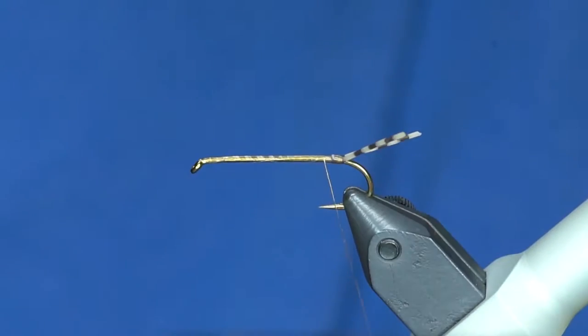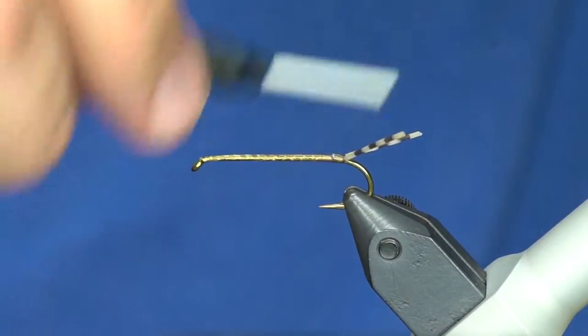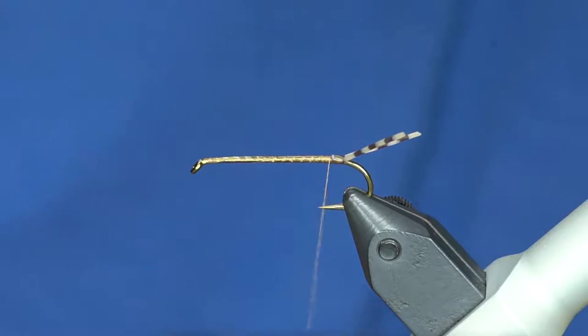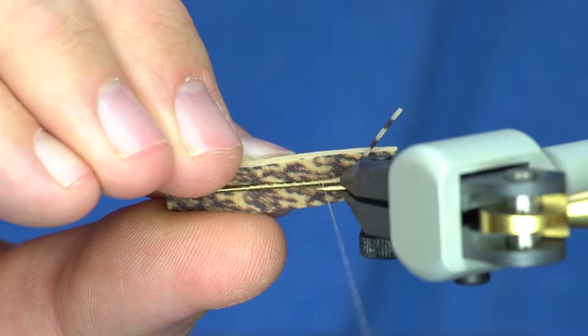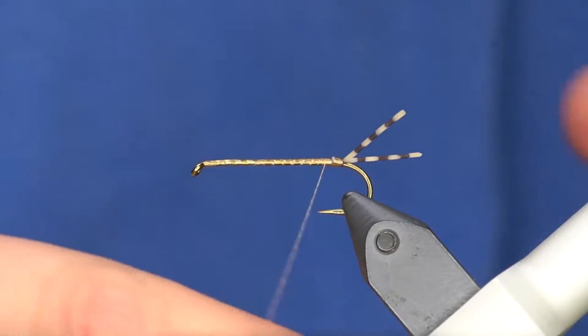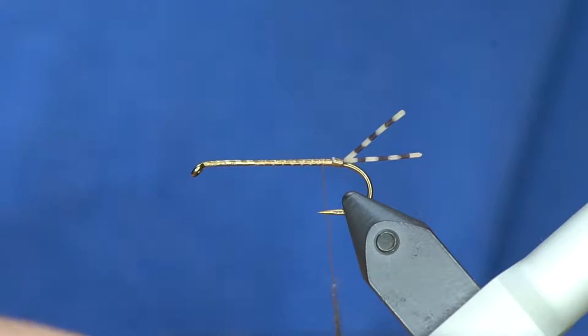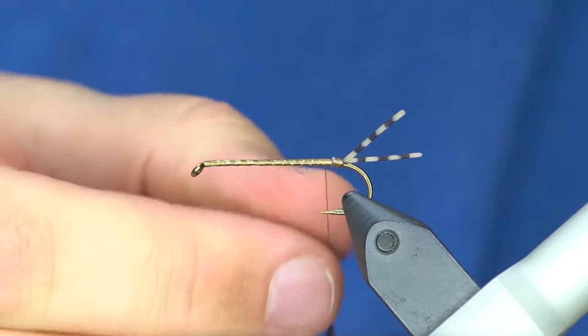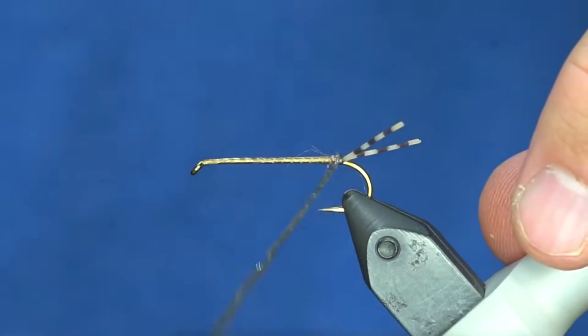Now we have a little fork tail. The body on this one is going to be quite a bit slimmer than the original because I want the photo foam to show through. I'm actually going to use bruiser blend for the body. If you haven't dubbed bruiser blend, it dubs down really nice. Usually I only use it for streamer heads, but it's actually a really good kind of buggy dubbing.